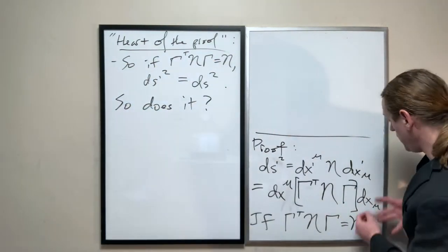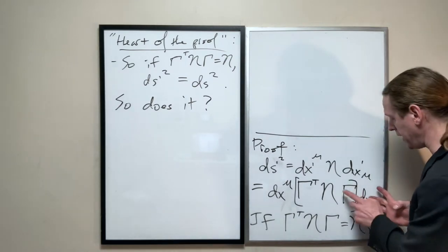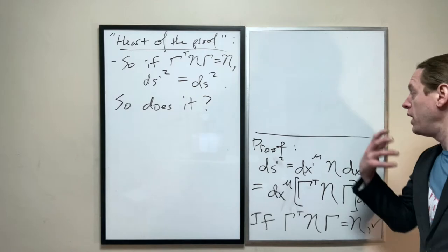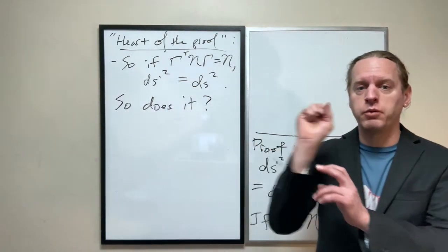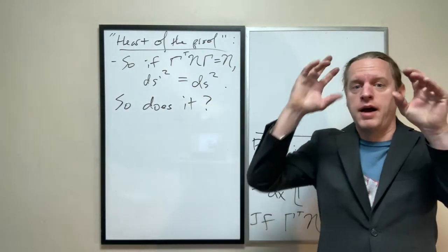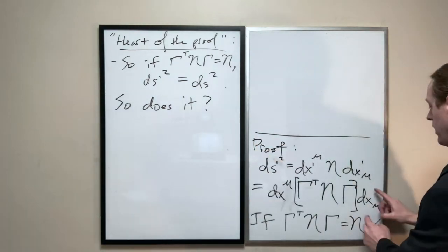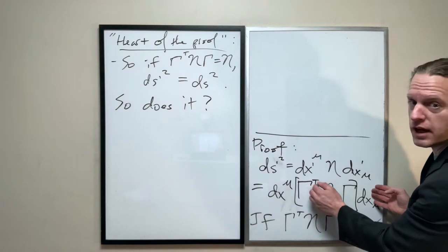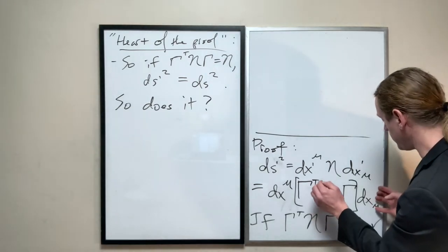So again, we start with a column vector, operate it with a 4x4, that gives us back a column vector. That's literally the same thing as y equals mx, with y and x as column vectors, m as a matrix. Then we operate it with a Minkowski metric, which is a 4x4. That's still a column vector.